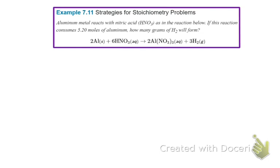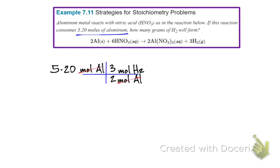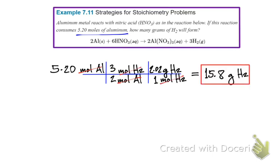Here's another example from the book that you might want to try — you may pause this video now. Our starting point is 5.20 moles of aluminum. Set up your dimensional analysis — notice that aluminum is already in moles, so we can go straight to using the mole ratio, then convert moles of hydrogen gas to mass in grams. This gives us 15.8 grams of hydrogen gas — 5.20 times 3 times 2.02 divided by 2 gives us 15.8.